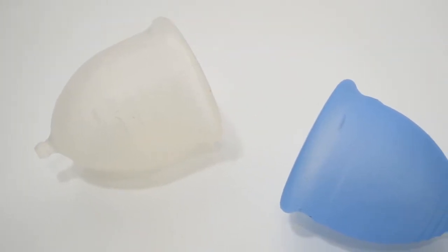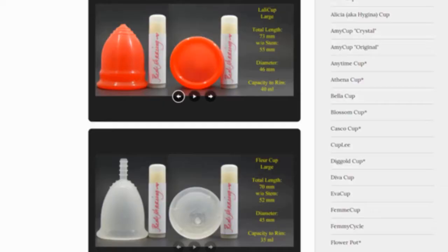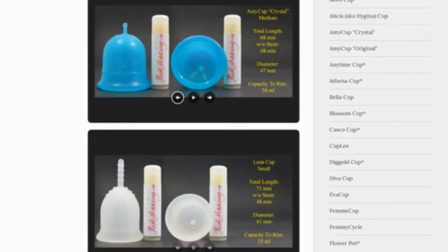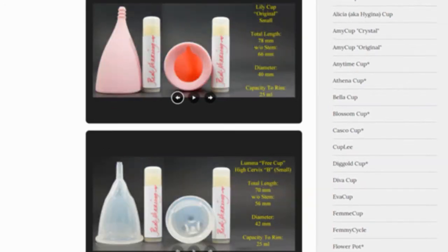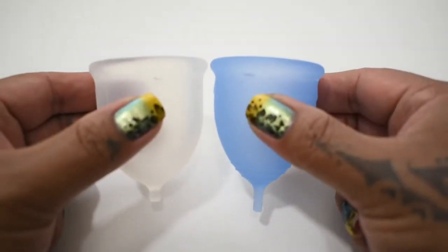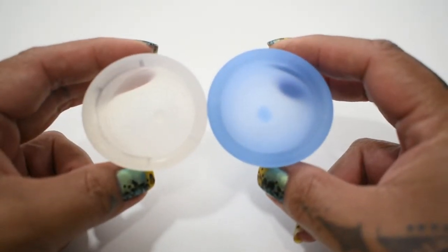This is a squish comparison between the My Cup and the Salt Cup, both in a size large. Don't forget that you can compare these cups with other cups that I have on hand by visiting the link in the description below. I'm going to place both of these cups in the palms of my hands, give them a squish, swap hands, give them a squish again, and then compare the rims.